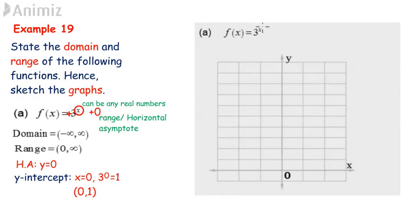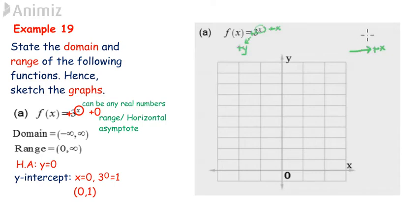We have positive x, so the graph moves to the right. We also have positive y, so the graph is going up. Therefore, the graph travels towards the first quadrant.